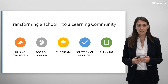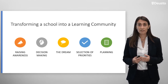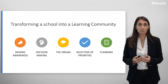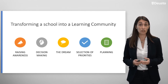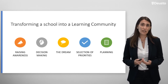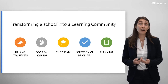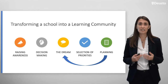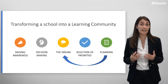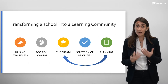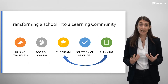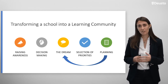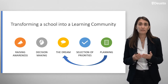The five steps are: first, raising awareness; second, decision-making; third, the dream; fourth, the selection of priorities; and ending with planning. But the process never ends with planning. Once the center has achieved its dreams, it can rethink, review, and evaluate the process and start with the dream again. These phases are not static or fixed — they are dynamic and are agreed upon in any school in dialogue with the community.